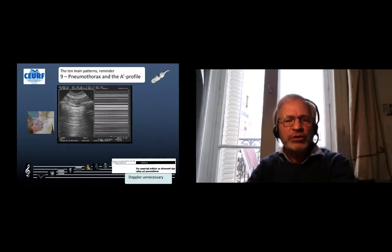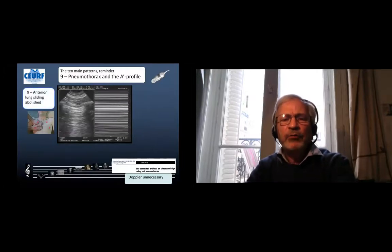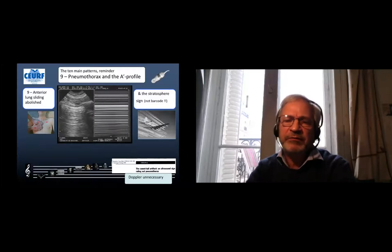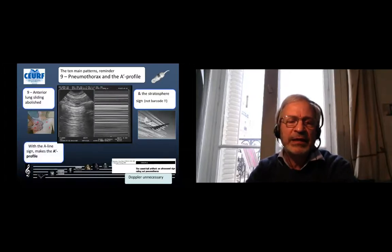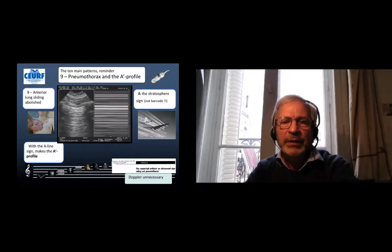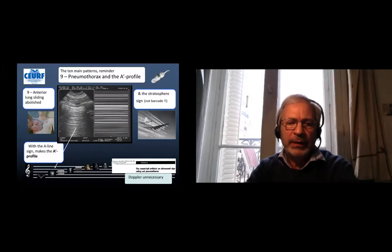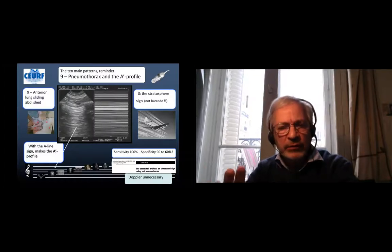And now we see what is the A-prime profile of the BLUE protocol. We can see a complete abolition at the left image of lung sliding anteriorly, which makes in the M-mode the stratosphere sign. It looks like stratospheric phenomena. And now I look carefully in the Merlin space and I see only A-lines, one A-line. Here we have the A-prime profile defined this way.